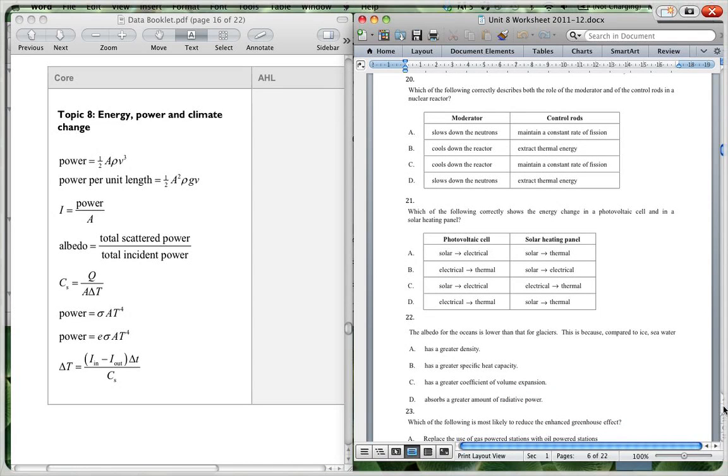Question 20. Which of the following correctly describes both the role of the moderator and of the control rods? So we've got the moderator and the control rods in a nuclear reactor. So the moderator slows down the neutrons. That's correct. That slows down the neutrons. And the control rods, what the control rods do is they are used to absorb the neutrons. So as to control the whole reaction so that it doesn't form a chain reaction and therefore a nuclear bomb. So it maintains a constant rate of fission by absorbing some of the neutrons. So that would be A would be the correct answer for that one.